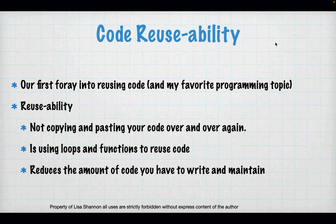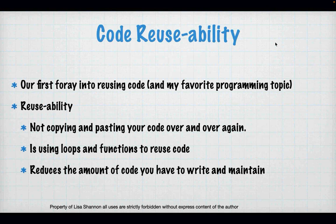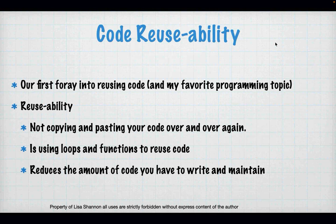Over the next couple of weeks, my favorite topic in programming is code reusability. It's my favorite topic because it helps us write more efficient code if we stick to the principles. It also allows you to have better control of your code. It makes code more maintainable because you write fewer lines of code. Reusability is not copying and pasting — you're using loops and functions and objects to use the same set of code again and again, and it reduces the amount of code you have to write and maintain.